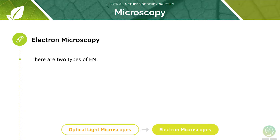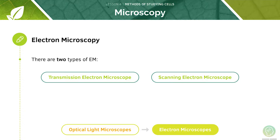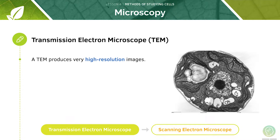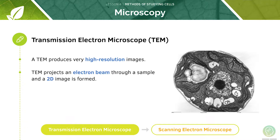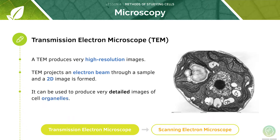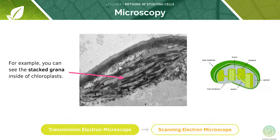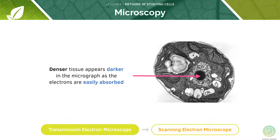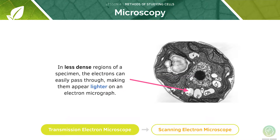There are two types of electron microscopes: transmission electron microscopes and scanning electron microscopes. A TEM will produce very high resolution images. TEM projects an electron beam through a sample and a 2D image is formed. It can be used to produce very detailed images of cell organelles — for example, you can see the stacked grana inside the chloroplasts. Denser tissue will appear darker in the micrograph as the electrons are more easily absorbed, while in less dense regions the electrons pass through easily, making them appear lighter.